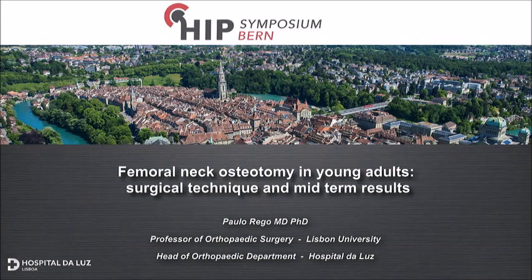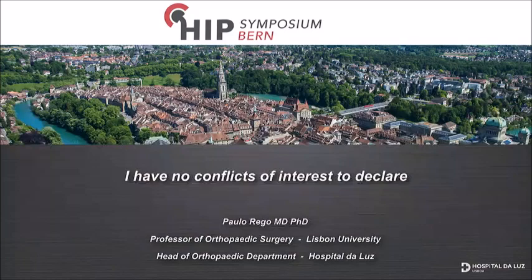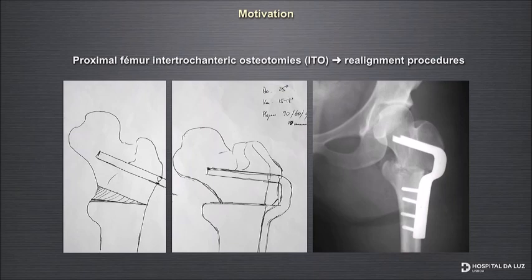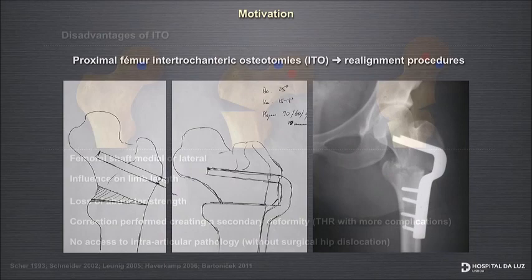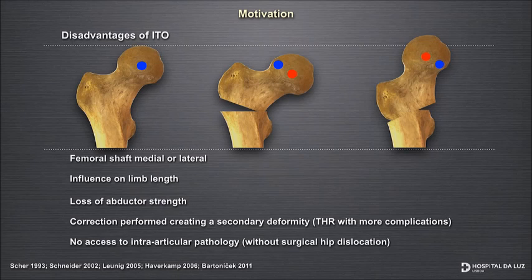For a long time, proximal femur intertrochanteric osteotomies have been used as realignment procedures. However, there are certain disadvantages. The fact that you shift lateral or medial the femoral diaphysis and you move around the center of rotation of the joint, you can have a major influence on limb length.